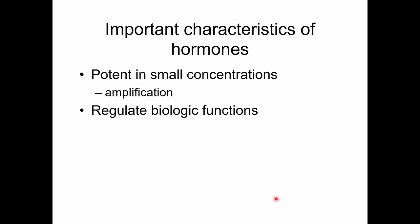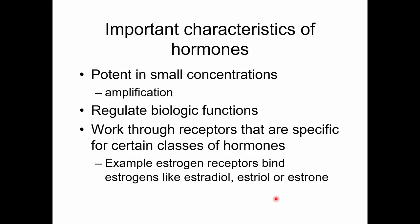Hormones regulate biologic functions - metabolism, reproduction, water balance, blood glucose levels - and they work through receptors. For example, estrogen is a steroid hormone that binds to estrogen receptors. Estrogen is a category with subtypes like estradiol, which is the most common estrogen found in human females, and estriol or estrone. All of these bind to estrogen receptors - not to testosterone receptors or insulin receptors. They work specifically through their own type of receptor.